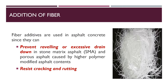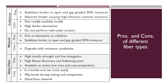Now, why are we adding fiber? Fiber additives are used in asphalt concrete because they can prevent raveling or excessive drain-down, especially in stone mastic asphalt where a higher amount of bitumen content is used. Fiber also resists cracking and rutting. There are different types of fibers used in the industry in asphalt mixtures. From the literature review, I summarized three main types of fiber additives: glass fibers, mineral fibers, and cellulose fibers. The pros and cons of each fiber material are listed in the comparison.